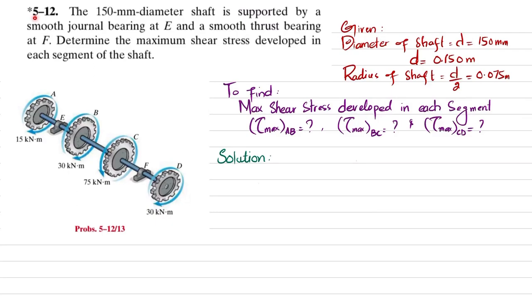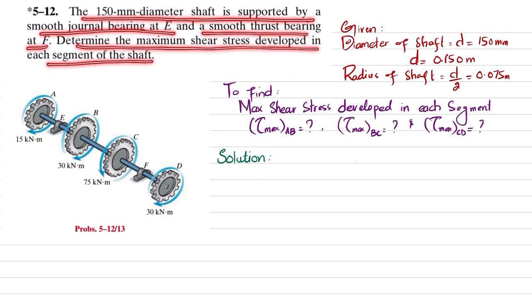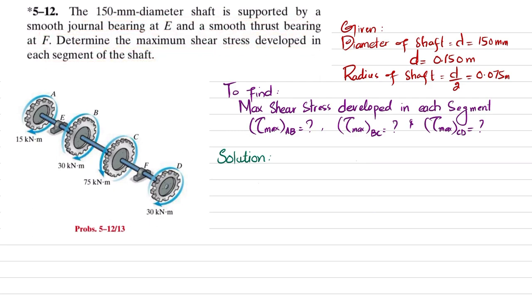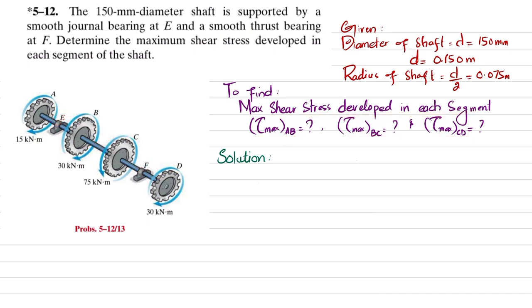Welcome back. Problem 5-12. The statement is: the 150 millimeter diameter shaft is supported by smooth journal bearing at E and smooth truss bearing at F. Determine the maximum shear stress developed in each segment of the shaft. You can see the shaft with bearings at E and F, loaded by various torques. We need to find the maximum shear stress in segments AB, BC, and CD. Let's start with the solution.